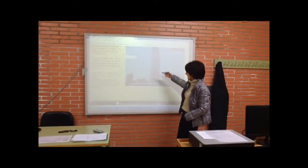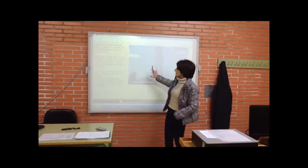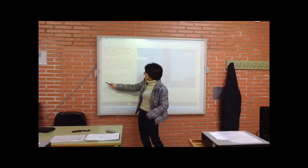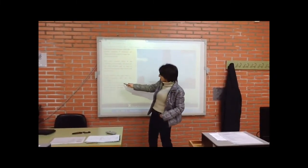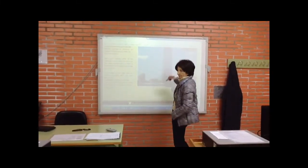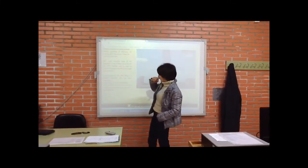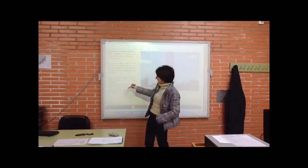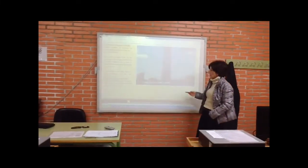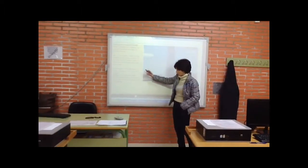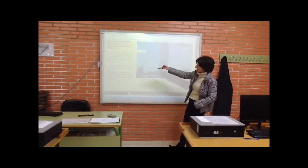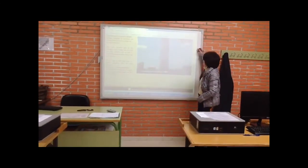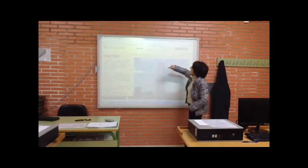Here you can see a modern skyscraper with its structure. Its structure is formed by two parts. One of them is a skeleton or frame made of steel. The other part is the skin of the structure. There are two types of structures: the frame and the skin, and we will talk about this later.